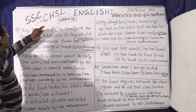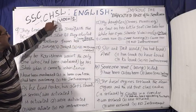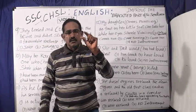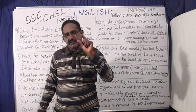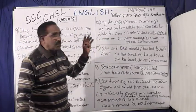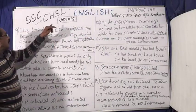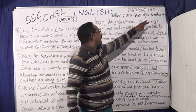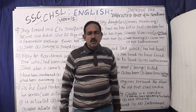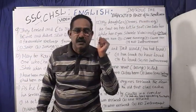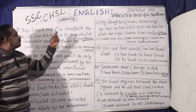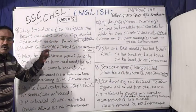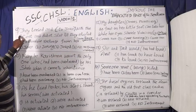In each and every examination of CHSL combined higher secondary level, you have a minimum of two bits of this type. There are many types of bits given in the English paper. This is one type of bit. You have two bits on this model — improve the bracket part of the sentence — in that English paper. In my previous video, I covered up to eight bits. Now you look at the ninth bit onwards.